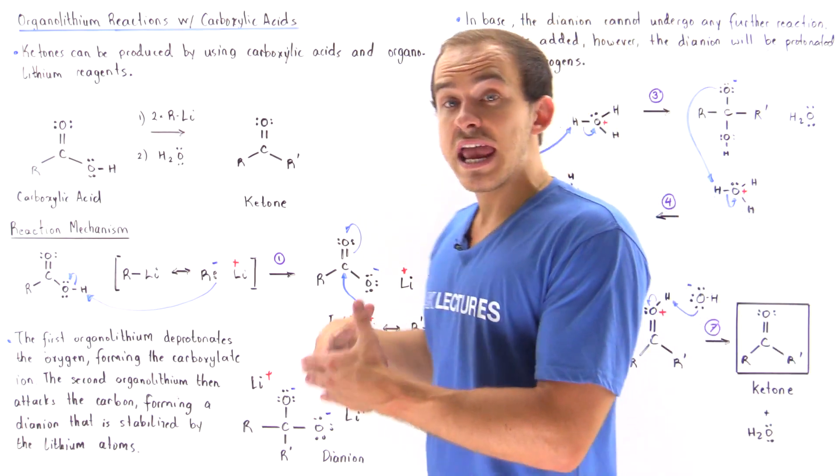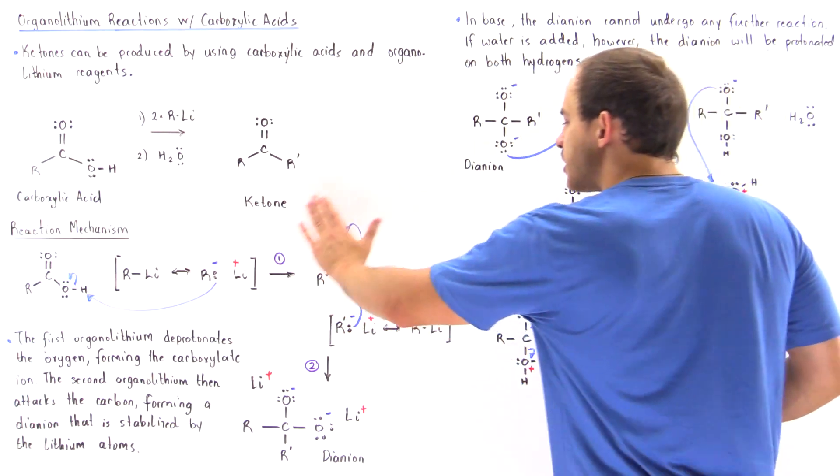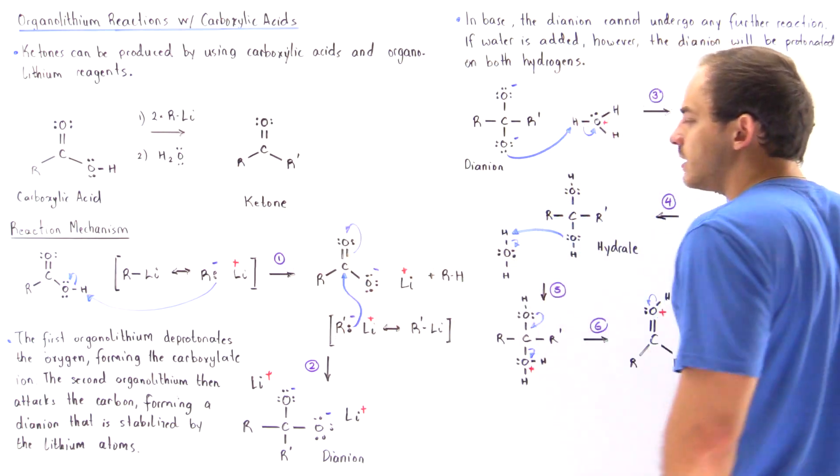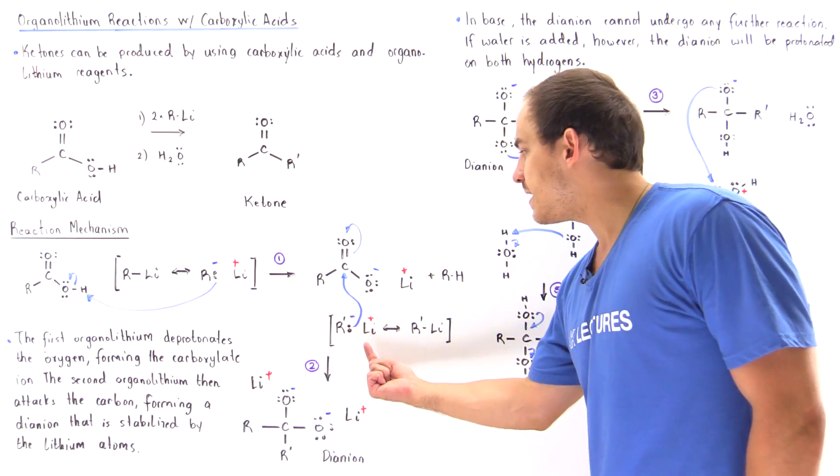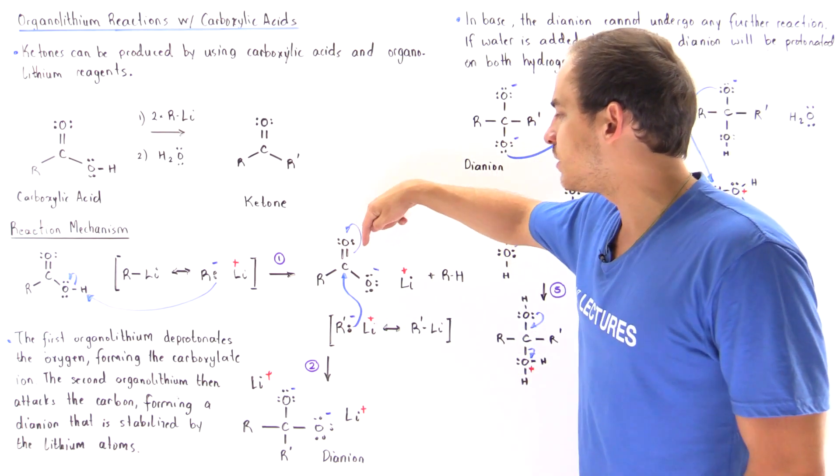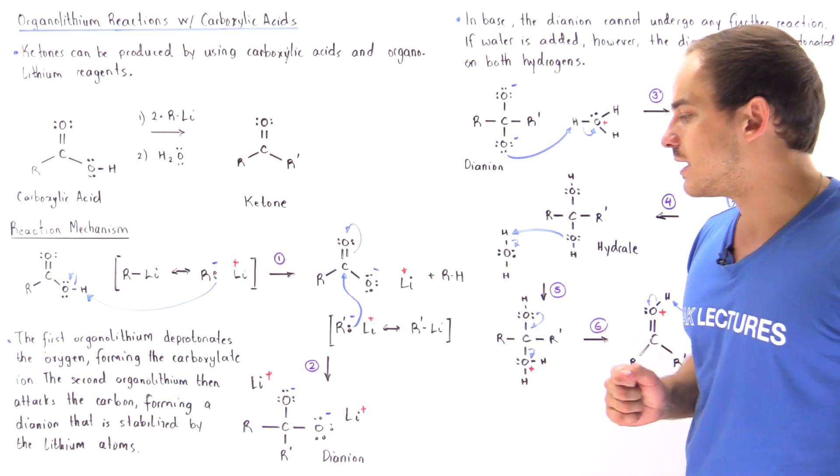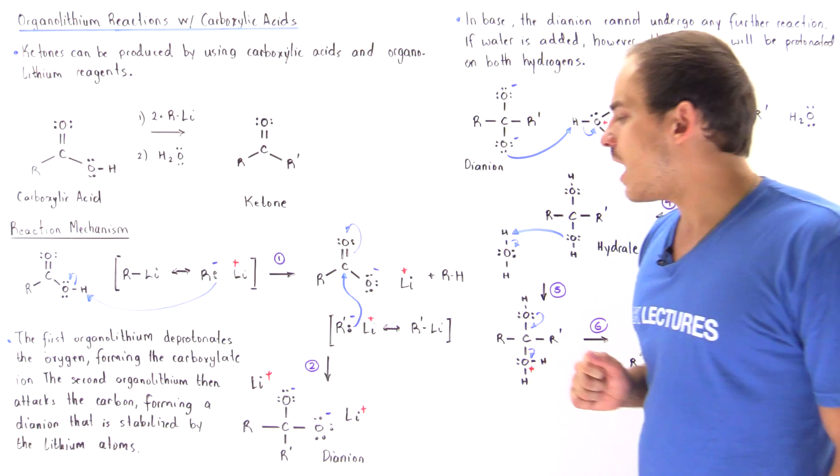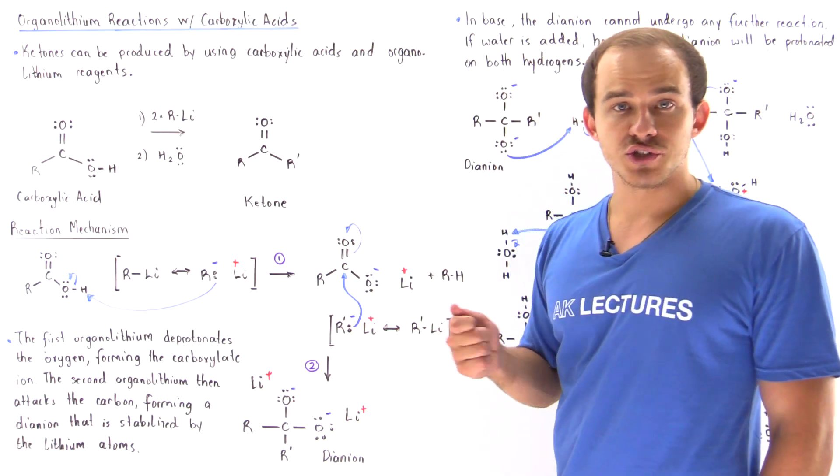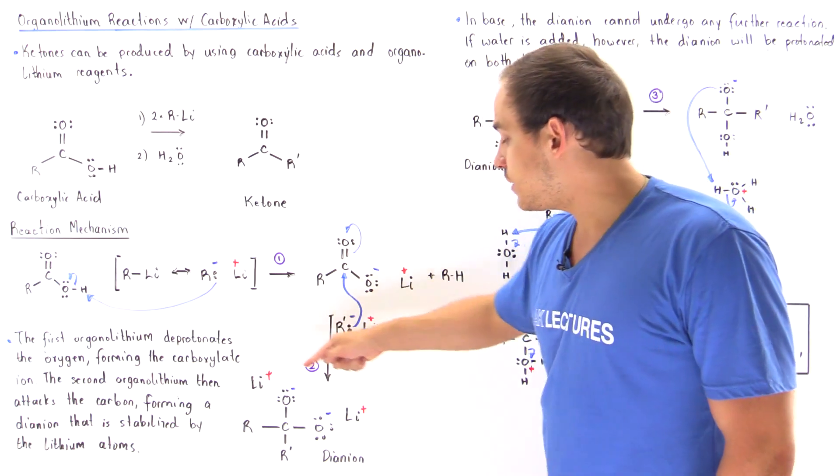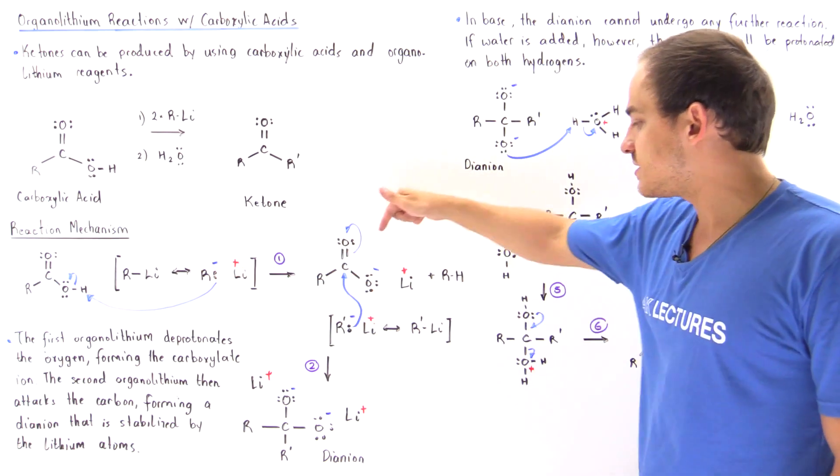In the second step, we take the second organolithium reagent and mix it with the carboxylate ion. This is a strong enough nucleophile to attack the carbon, displacing the pi bond and forming a di-anion. This di-anion contains two full negative charges on the two oxygens. In the presence of the two lithium ions formed in steps one and two,